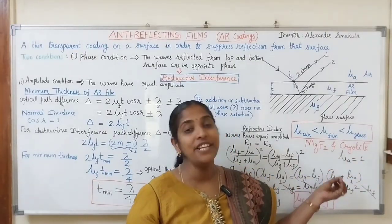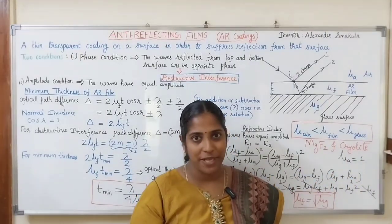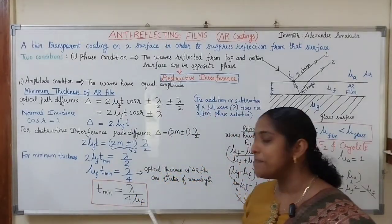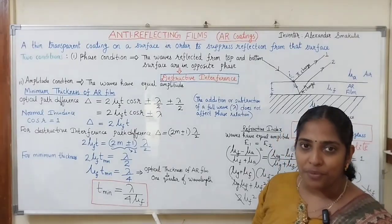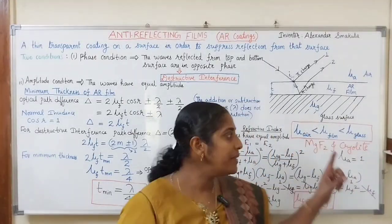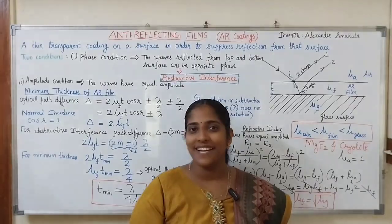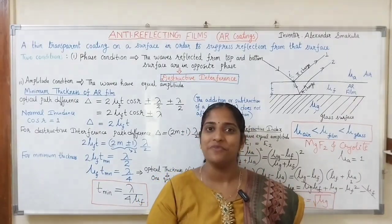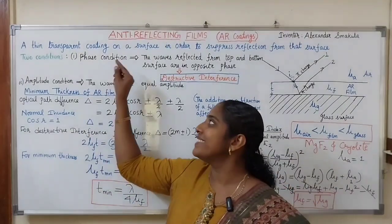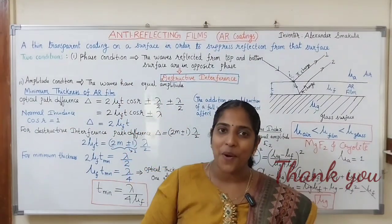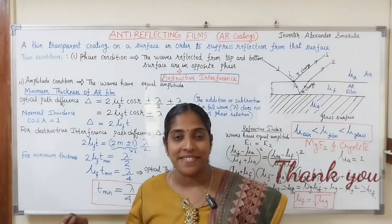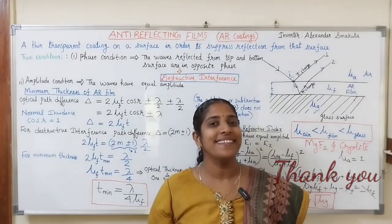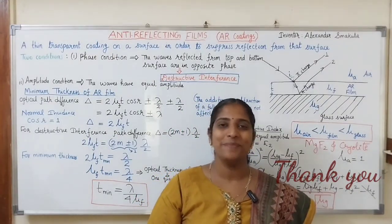Magnesium fluoride is cheaper than cryolite and is widely used for the production of AR films. In summary, for a film to act as an AR film, its thickness must equal λ/(4μF) and its refractive index must be less than the refractive index of the glass substrate — specifically μF = √μG. Anti-reflecting film is a thin transparent coating on the surfaces of optical devices to suppress reflection and increase the efficiency of those devices. Thank you. Bye-bye.